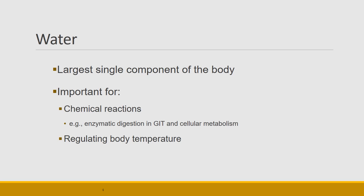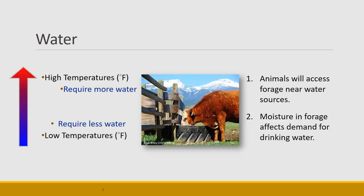Water is also really important in helping regulate body temperature. When temperature is high, animals require more water, and when temperature is low they require less. Animals will access forage that's near water because they require so much of it on a daily basis. The demand for water depends not only on temperature but also on what the animal is eating, because any plant the animal eats has some water in it, which affects the demand for drinking water.